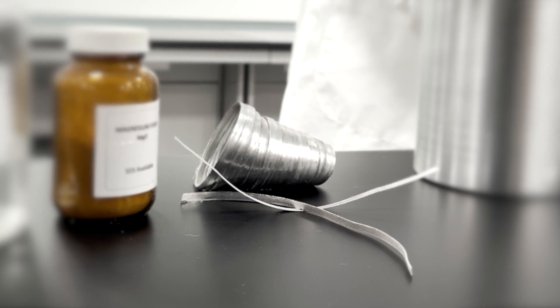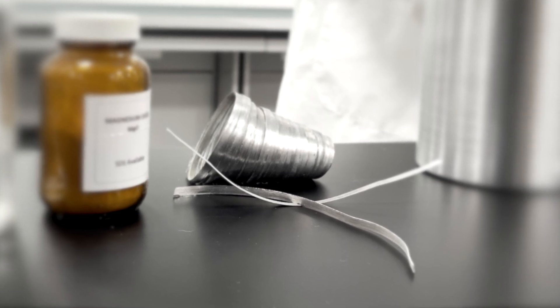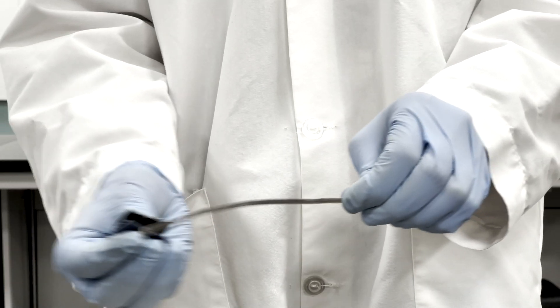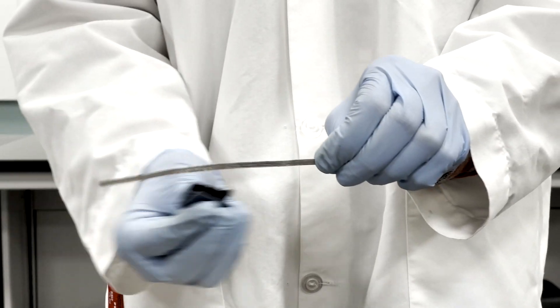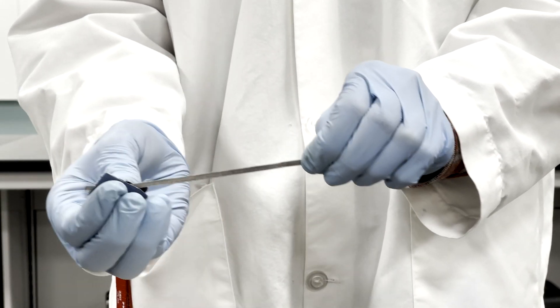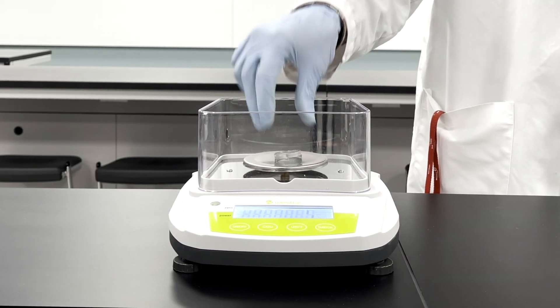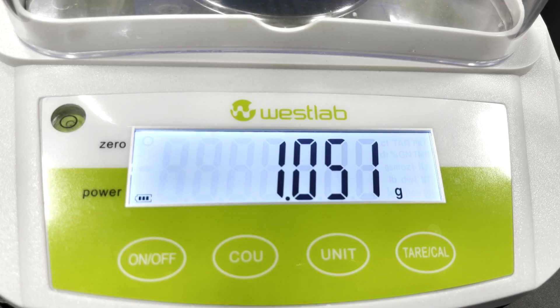Magnesium is so reactive that time in air causes the formation of magnesium oxide on its surface. We use the sandpaper to remove these oxides so that when we measure the mass of the ribbon, only the magnesium mass is recorded in the data table.